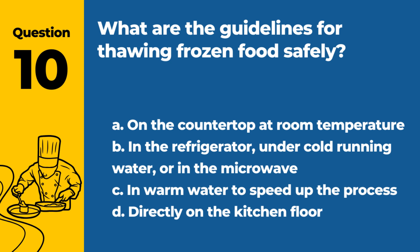Question 10. What are the guidelines for thawing frozen food safely? A. On the countertop at room temperature. B. In the refrigerator, under cold running water, or in the microwave. C. In warm water to speed up the process. D. Directly on the kitchen floor. Answer: B. Thawing frozen food in the refrigerator, under cold running water, or in the microwave are safe methods that prevent the growth of harmful bacteria.